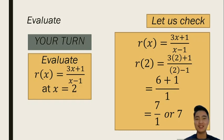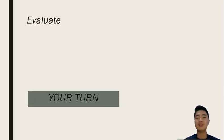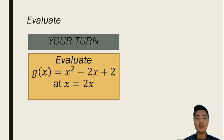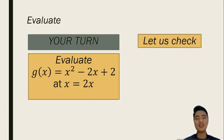Did you get the same answer? I hope you did. But if you didn't, we still have another try here for you. How about if you evaluate the function g of x equals x squared minus 2x plus 2 and x equals 2x. This is somewhat tricky for you. You have to replace all the x's with 2x. Let's try to check your answer.